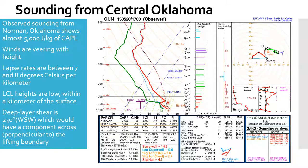Notice how our air parcel is warmer than our environment, which means it's buoyant — it wants to keep rising all the way up until just above 200 millibars where our equilibrium level is. That area between our parcel and our environmental temperature represents our positive buoyancy.